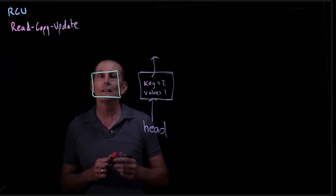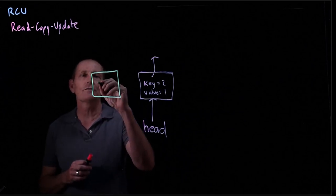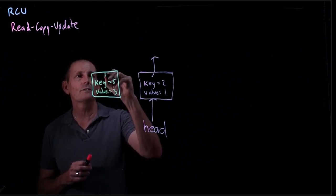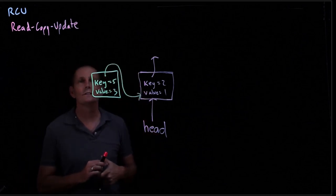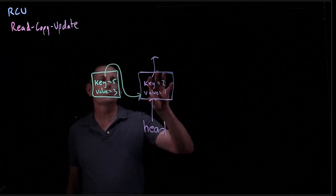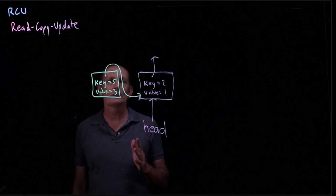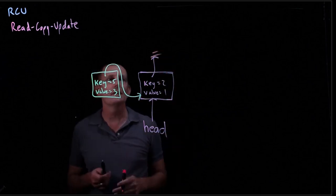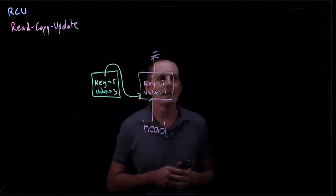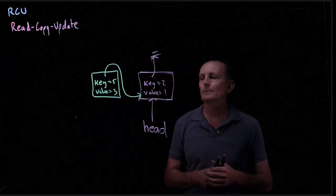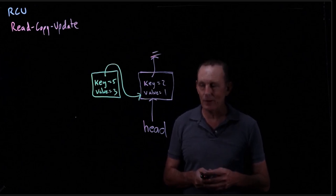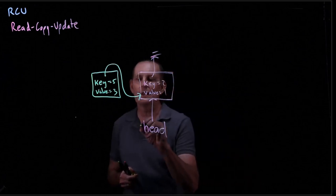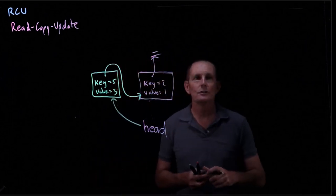We are now going to initialize all the fields — key equals five, value equals three — and we're going to set the next pointer of this new node to the first node in the linked list. Again, we're safe at this point. Readers will go to head and find the old list. Let's make this simpler and say this is null, so we've got a length-one list as far as any readers see. Now the insertion code is going to atomically change the head from the old first node to the new first node.